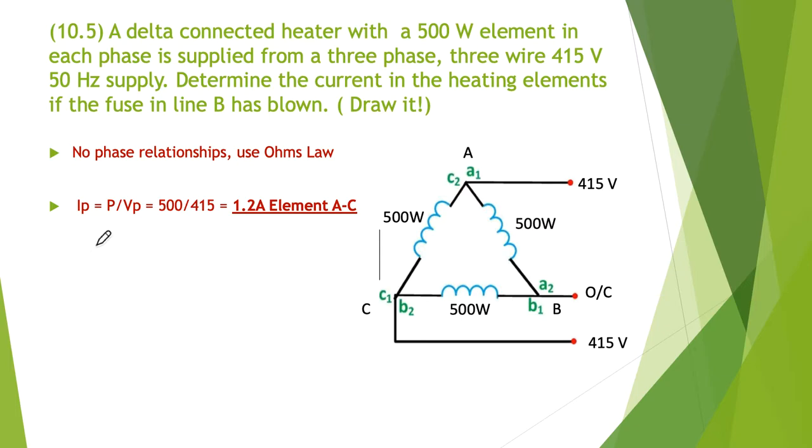And the first thing we can determine is the IP. The IP is the power divided by the voltage. Now we know the voltage is 415. So if to find out what the current is, the current is simply the power in the phase. So we know the phase power is 500 divided by 415 volts. And that works out at 1.2 amps through elements A to C.